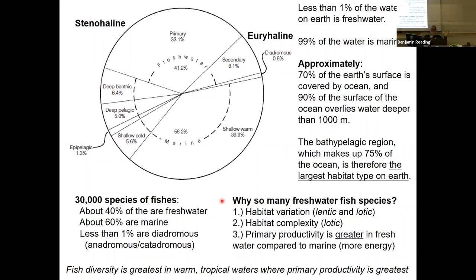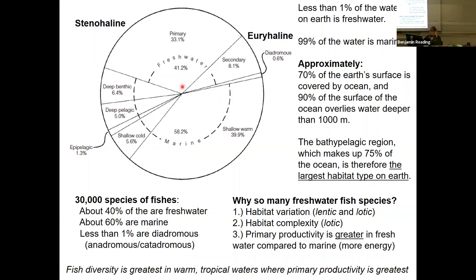Why are there so many freshwater fishes even though it's not a large habitat? Freshwater is close to the surface, warm, and shallow, so there's a lot of photosynthesis. Primary productivity is greater in freshwater compared to marine environments. Because freshwater is spread very thinly over surfaces, most light penetrates it, enabling photosynthesis — whereas in the ocean, sunlight doesn't penetrate the vast volume below.